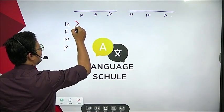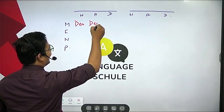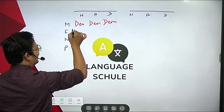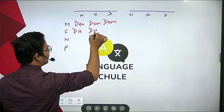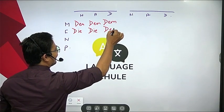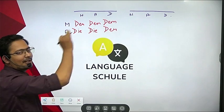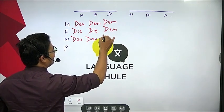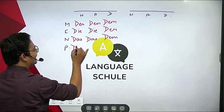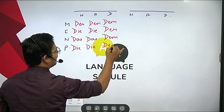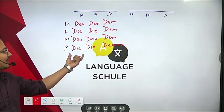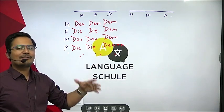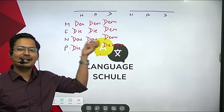For definite articles: masculine — nominative is 'der', accusative becomes 'den', dative becomes 'dem'. Feminine — nominative and accusative are both 'die', dative becomes 'der' (what was masculine is now feminine dative). Neutral — nominative and accusative are both 'das', dative becomes 'dem'. Plural — nominative 'die', accusative 'die', dative becomes 'den' plus n. Write these down for revision.